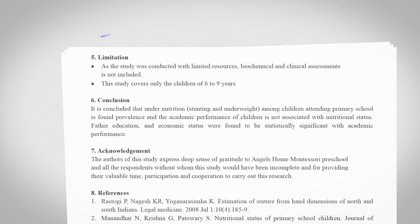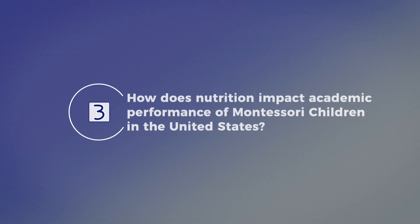The second research question comes both from the limitations and from expanding a variable. Within the limitations, they noted they weren't able to study a wide range of ages — only ages six through nine. So it would be interesting to expand that. Does nutritional relevance to academic performance change as you age? Does a high schooler and a kindergartner really need the same nutritional intake to perform the same way? This would analyze how age impacts the relationship between nutrition and academic performance.